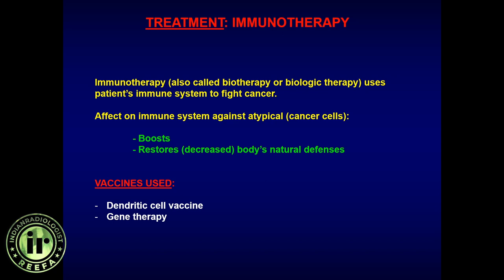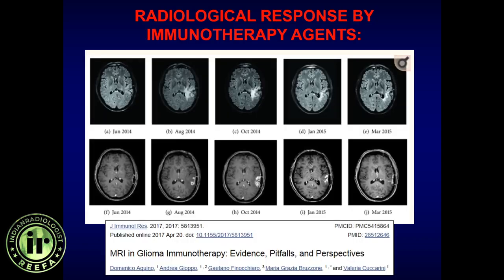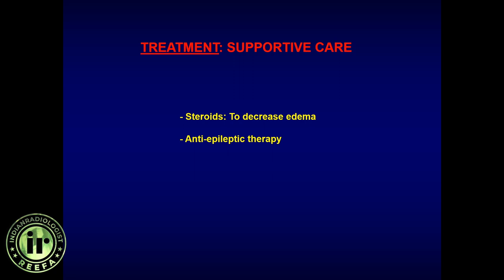Immunomodulation works on the understanding that tumors arise partly due to suppressed immunity. The approach involves boosting or restoring the patient's immunity through vaccines and similar agents. These are currently mainly in research trials but are being used at some institutions. A treated patient initially showed progression but later involuted, with good overall response over time.